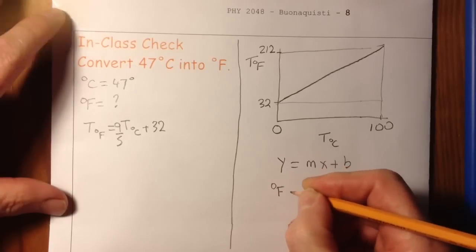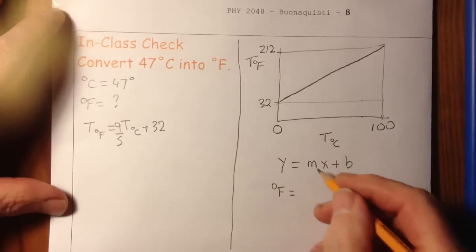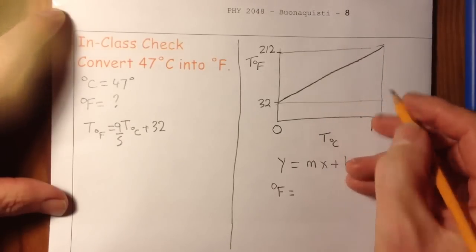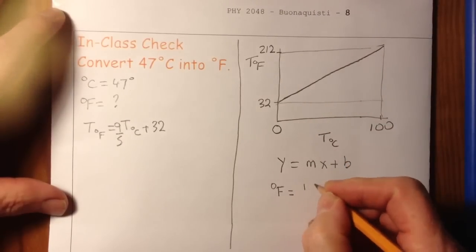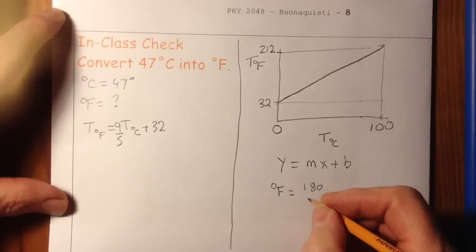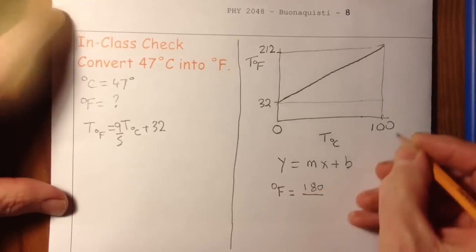I look at my slope and I see it's 180, 212 minus 32 over 100.